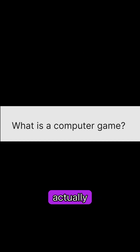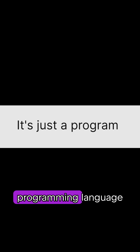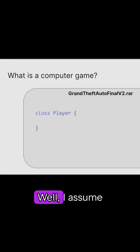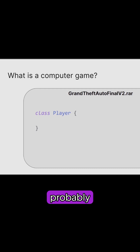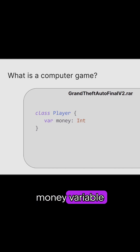Well, it turns out it's actually just a program written in a programming language similar to what you and I do every day. And if it's a program, then there's source code. In the source code, if your game has a player, you would probably create the player class for it, right? And if you want your player to have money, you would probably create the money variable for it.